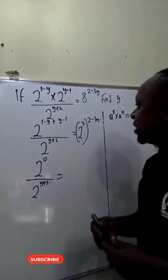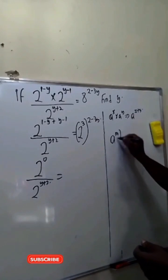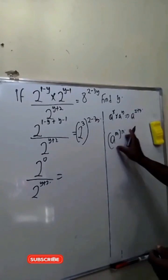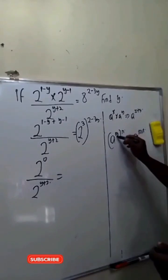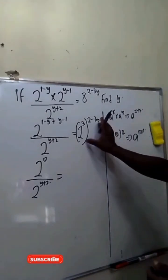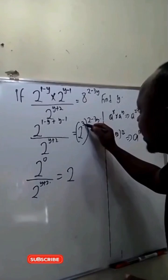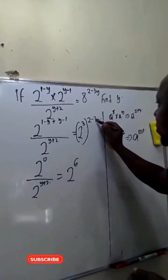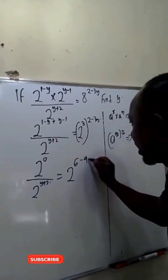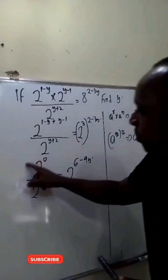Next, we apply the power law, which says that a raised to power m, raised to power n, can be expressed as a raised to power m times n. Applying this to the right-hand side, 2 raised to power 3 raised to power 2 minus 3y becomes 2 raised to power 6 and 3 times minus 3y is minus 9y.